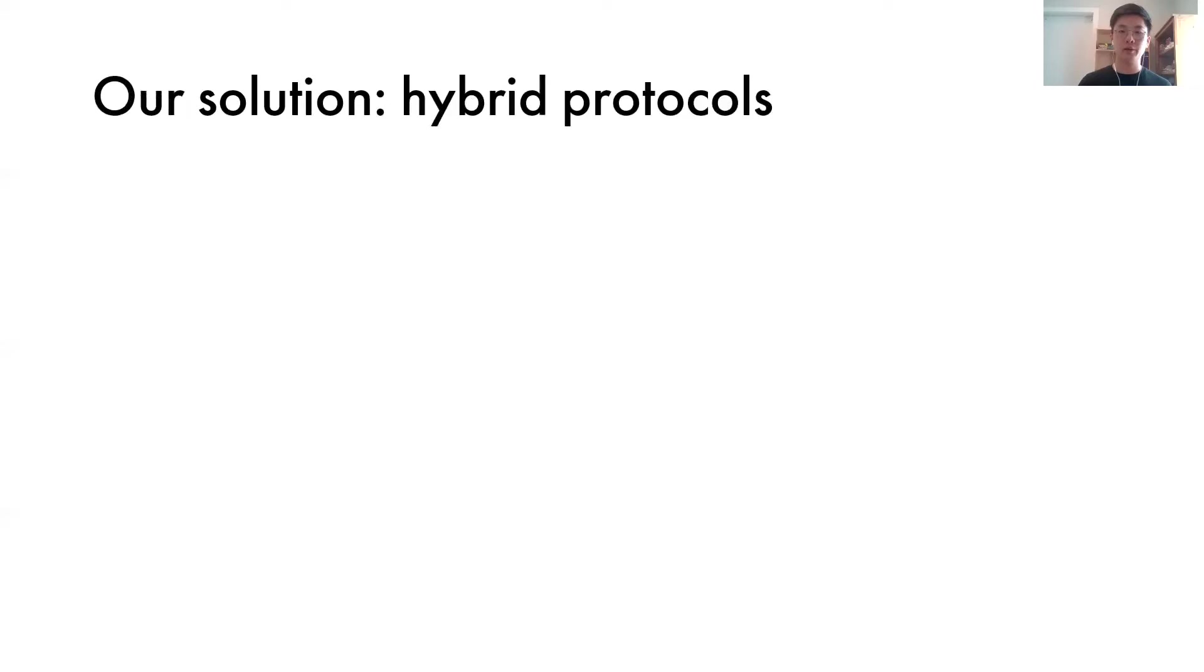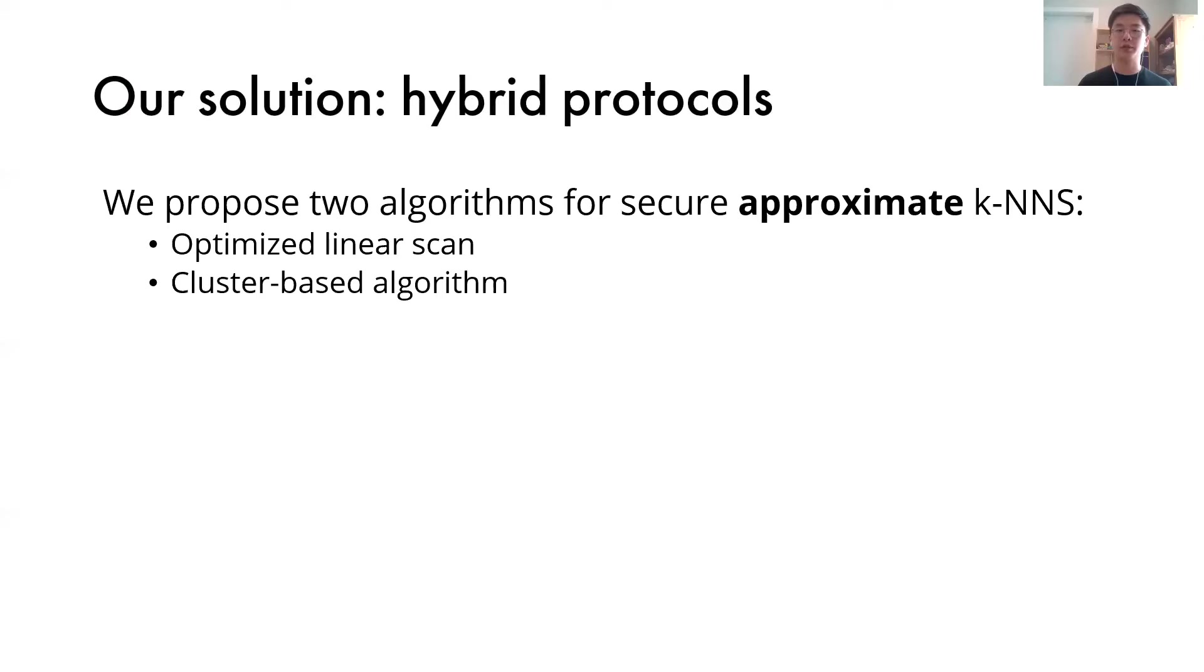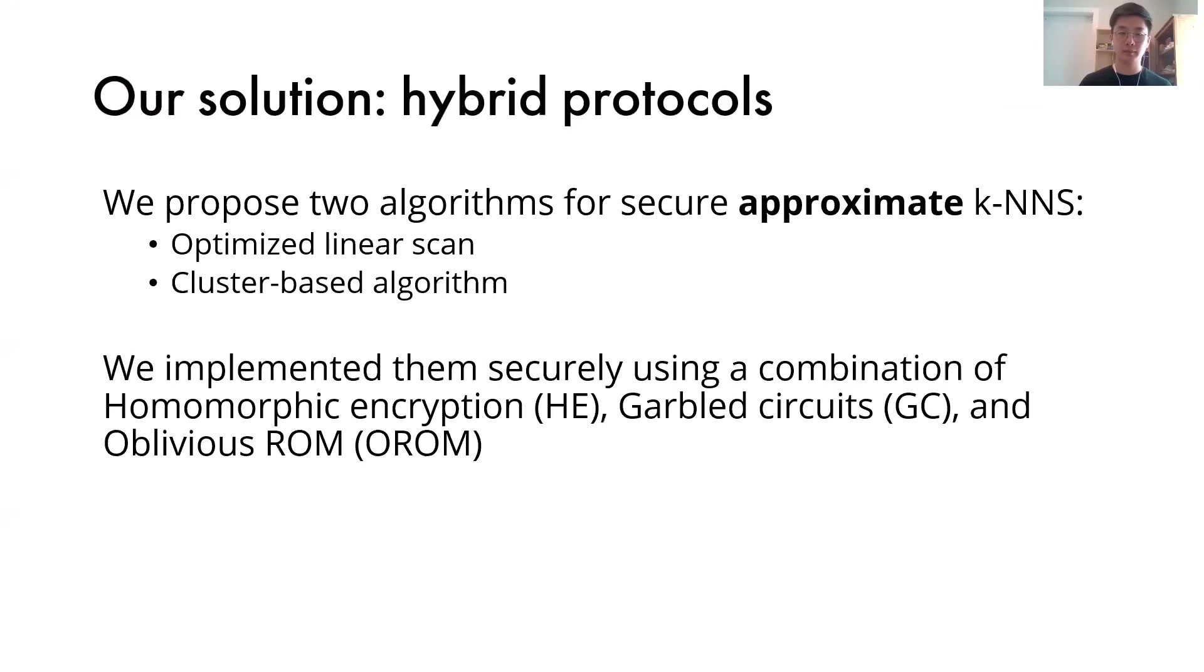Our solution is to use hybrid protocols. We will propose two algorithms for secure approximate k-nearest neighbor search. The first is an optimized linear scan. The second is a clustering-based algorithm that we designed. We implemented these securely using a combination of techniques, including homomorphic encryption, gobble circuits, and oblivious read-only memory.